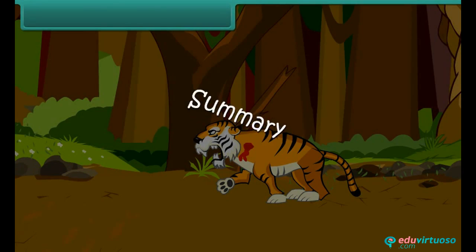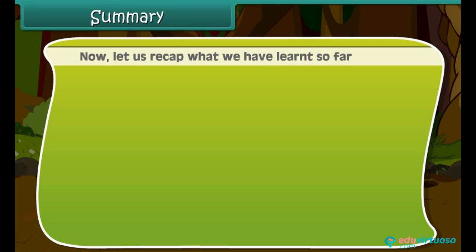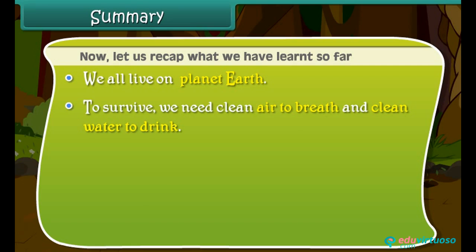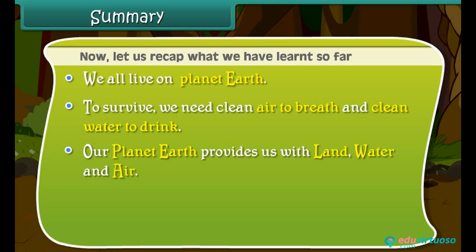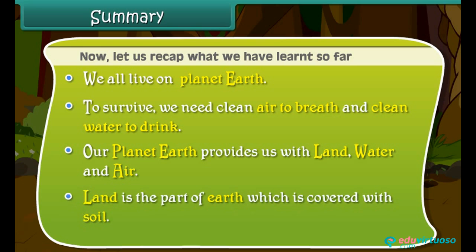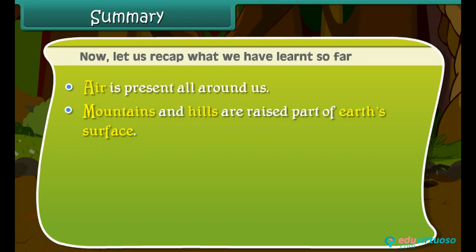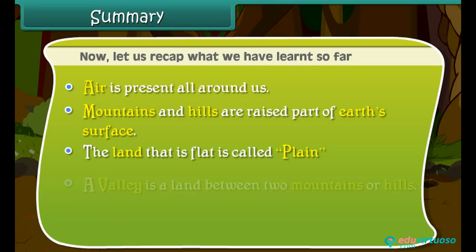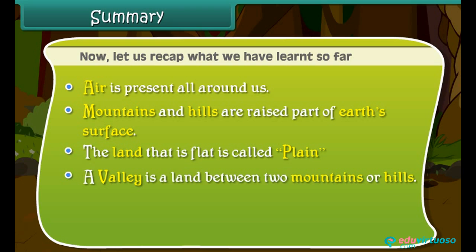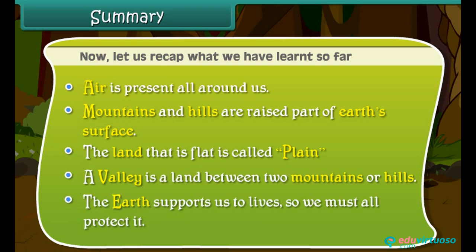Summary: Now let us recap what we have learnt so far. We all live on planet Earth. To survive, we need clean air to breathe and clean water to drink. Our planet Earth provides us with land, water and air. Land is the part of Earth which is covered with soil. Air is present all around us. Mountains and hills are raised parts of Earth's surface. The land that is flat is called a plain. A valley is the land between two mountains or hills. The Earth supports us to live, so we must all protect it.